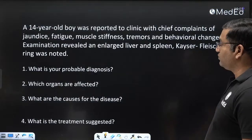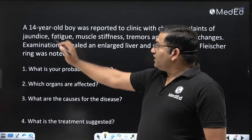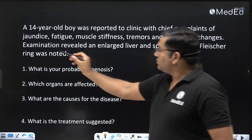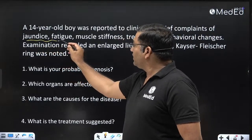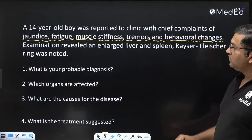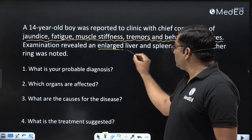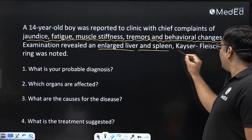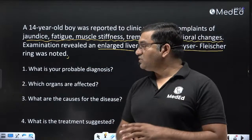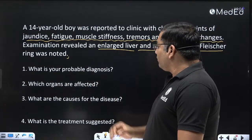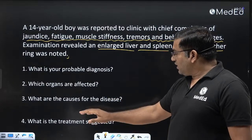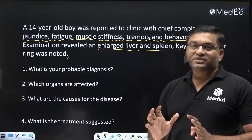In this case, a 14-year-old boy was reported to the clinic with chief complaints of jaundice, fatigue, muscle stiffness, tremors, and behavioral changes. Examination revealed an enlarged liver and spleen, and Kayser-Fleischer ring was noted. The sub-questions are: What is your probable diagnosis? Which organs are affected? What are the causes for the disease? And what is the treatment suggested?